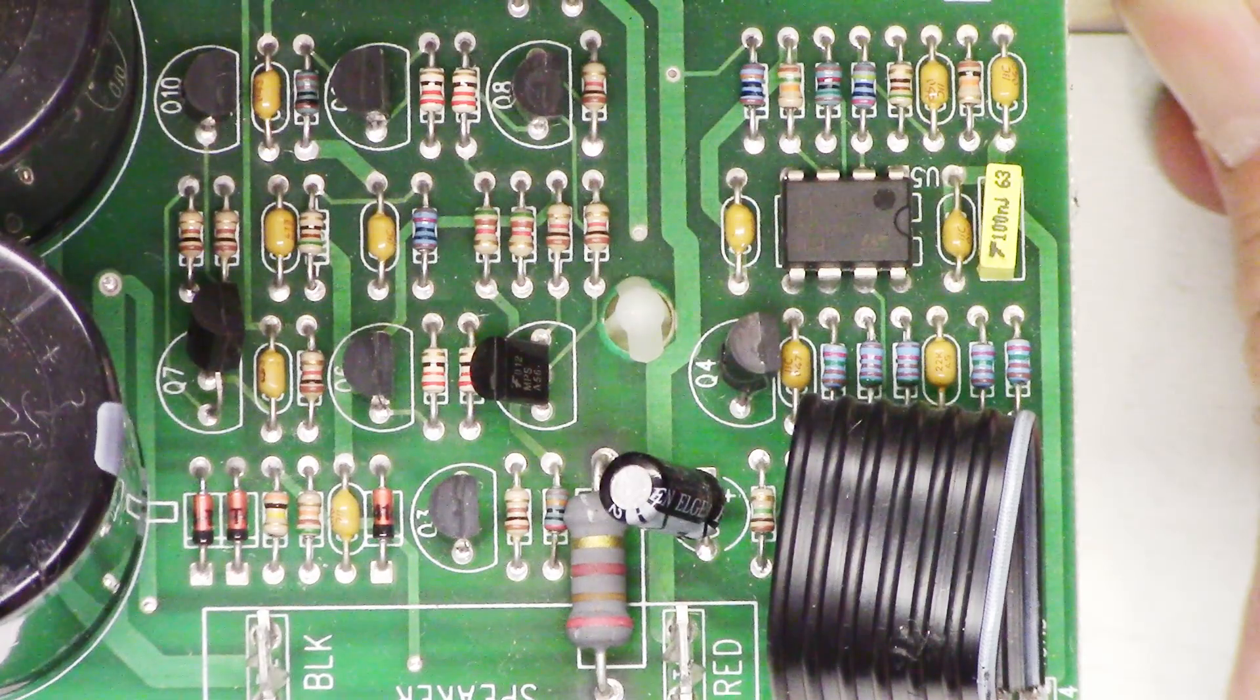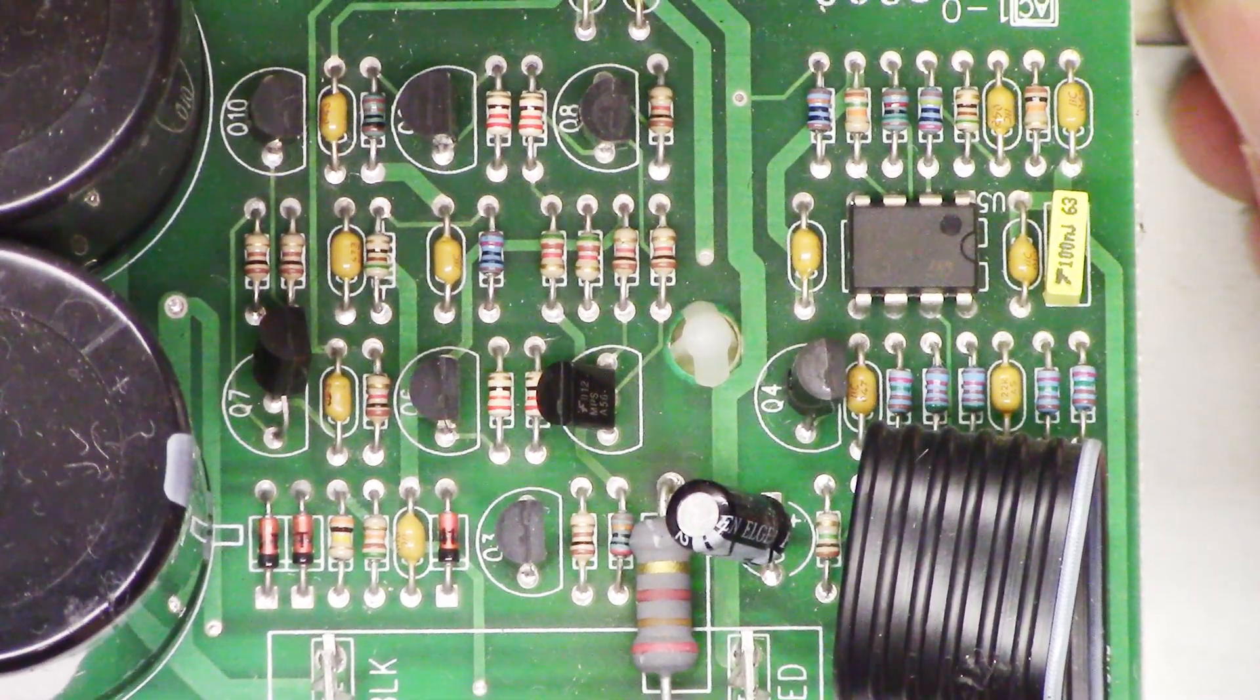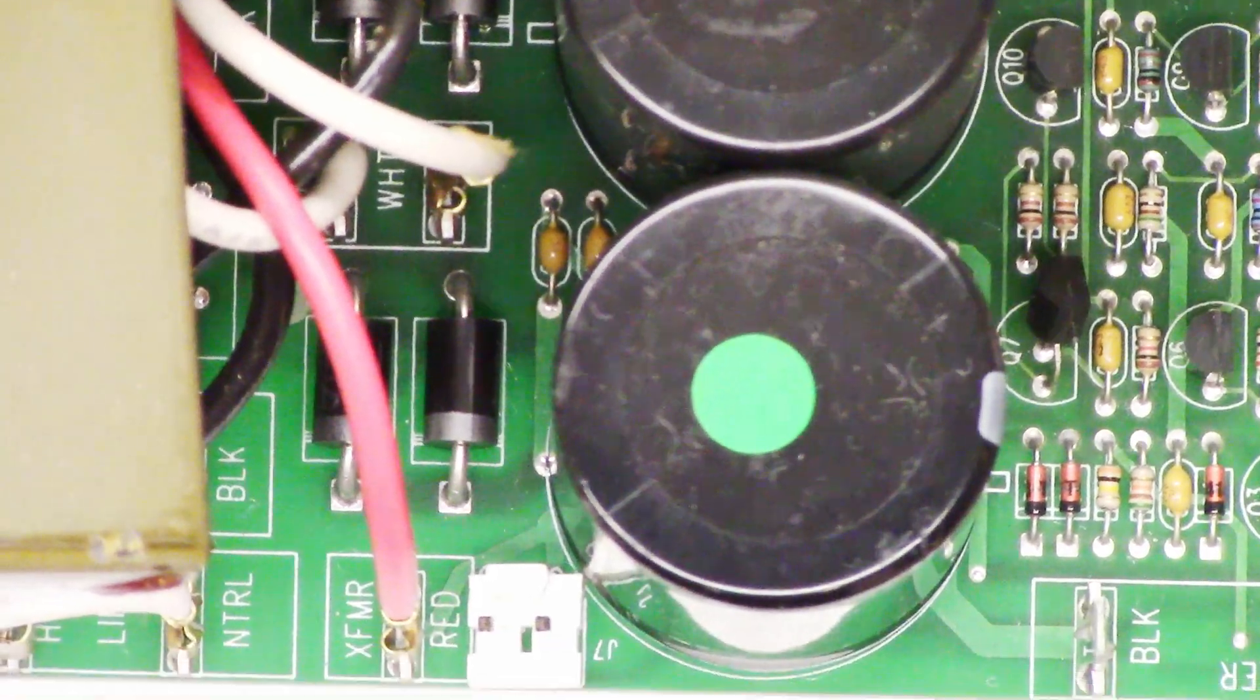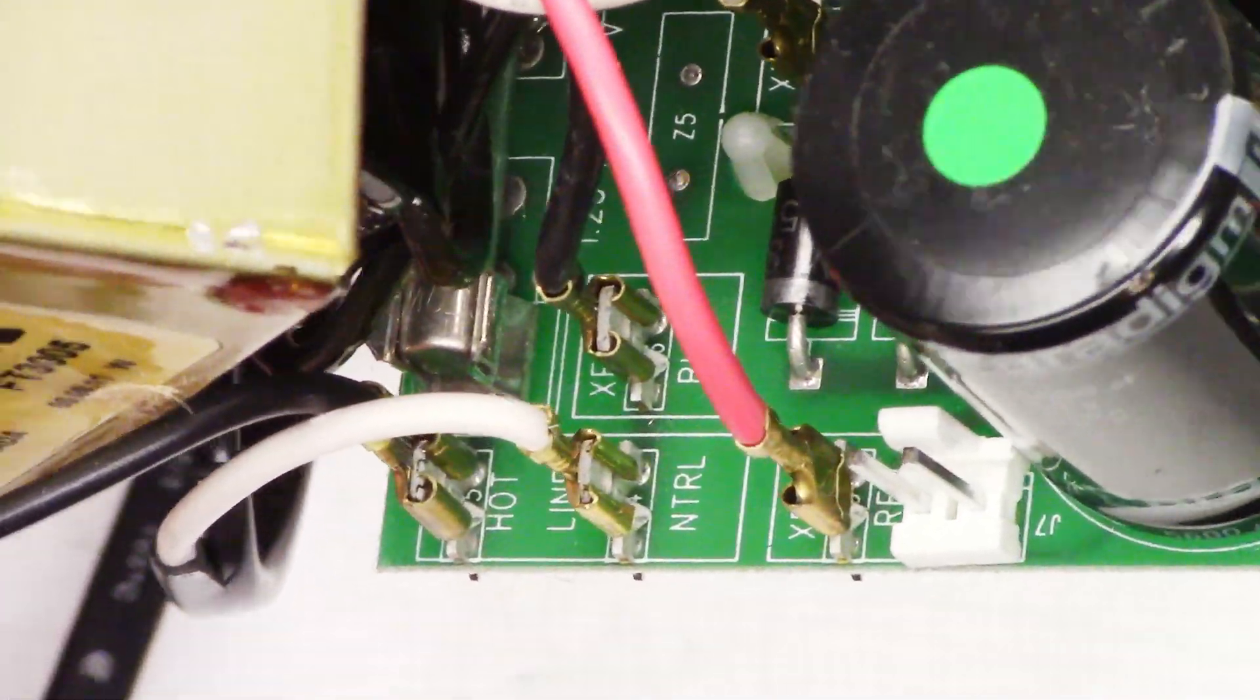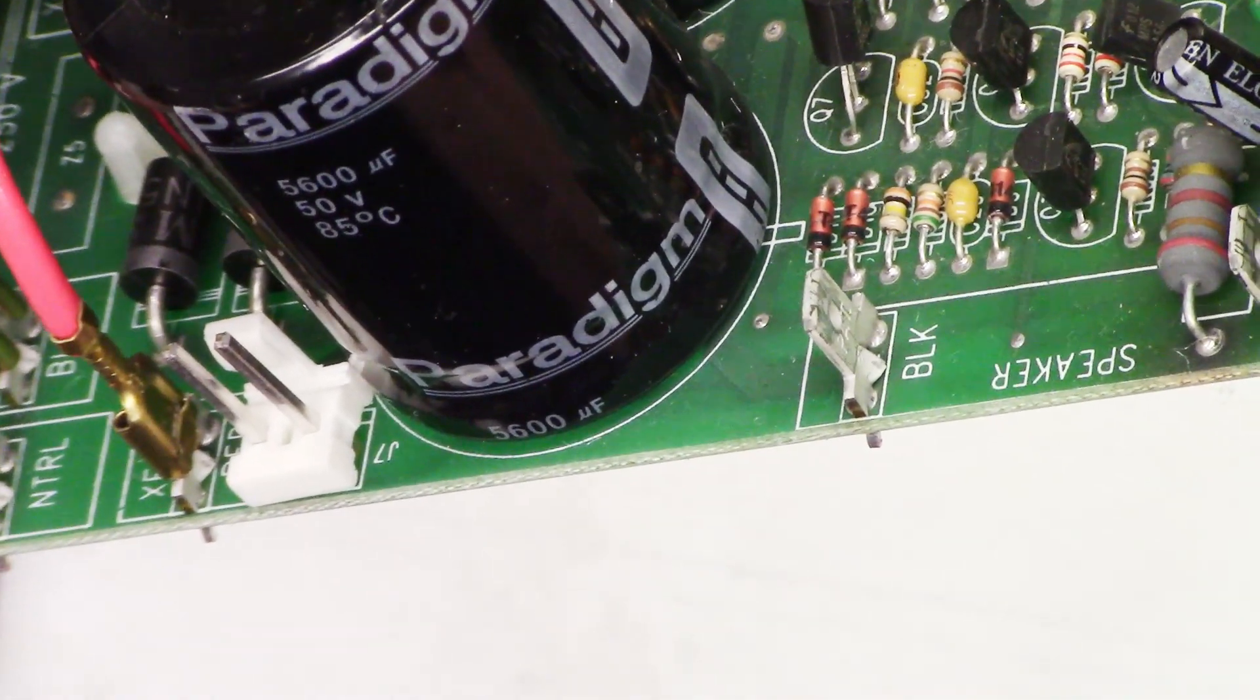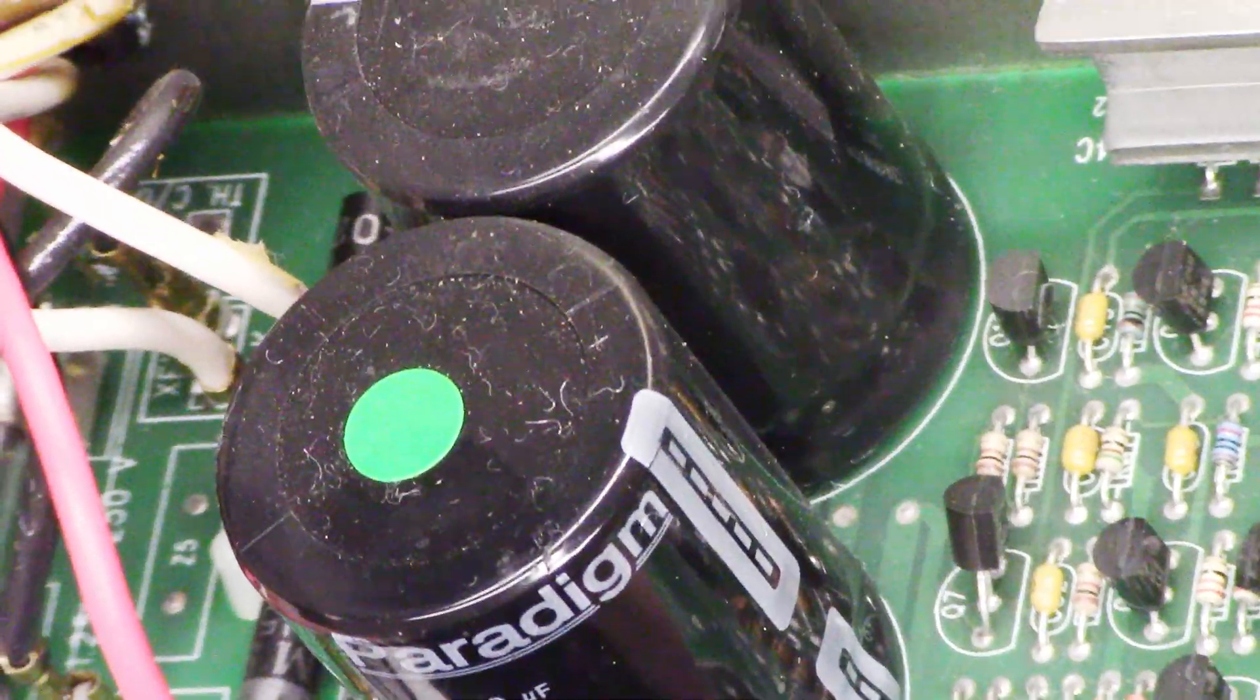So here's a close-up view of the circuit board. If you have a problem with one of these and you maybe have a burnt component and you can't make out the value, maybe this will help you somewhere down the road. There's the main filter caps, the rectifier assembly, there's the transformer, there's the fuse, Paradigm branded capacitors, 5600 microfarad, 50 volts, times two.